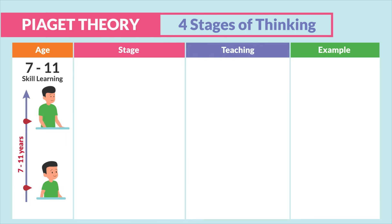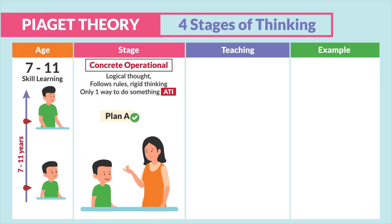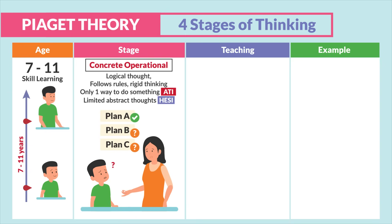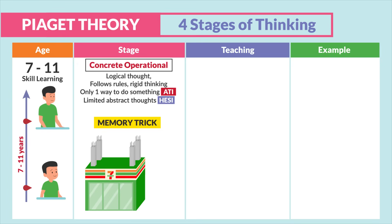The next age group is seven to eleven-year-olds — our skill-learning stage. This is characterized as concrete operational thinking. These children have logical thought, follow rules, and have rigid thinking — there's only one way to do something. It's defined as limited abstract thought. For a memory trick, think 7-Eleven minimarts: they have concrete all around with no trees or grass. So concrete thinking is between ages 7 and 11, like the 7-Eleven minimarts.